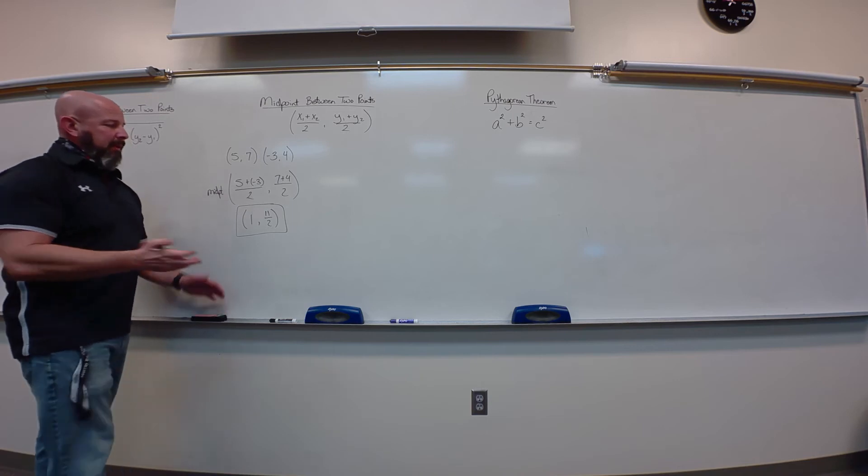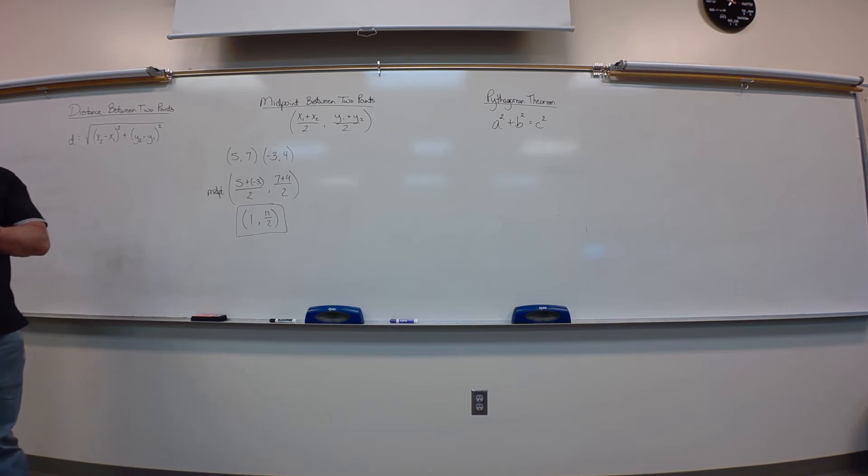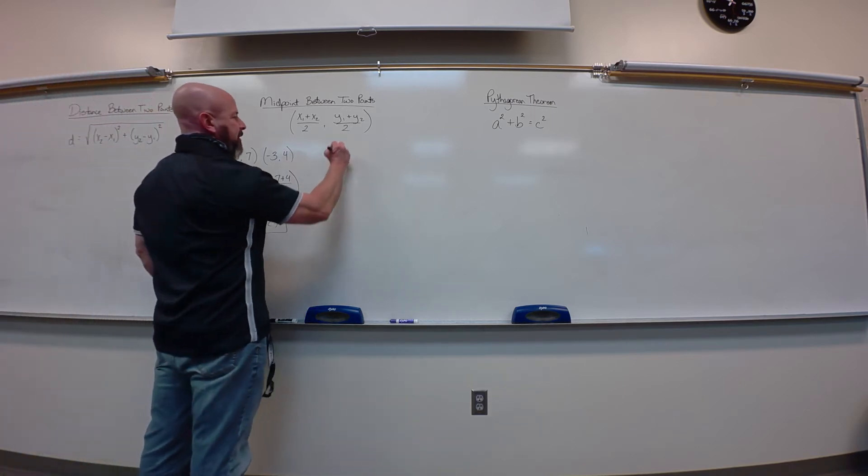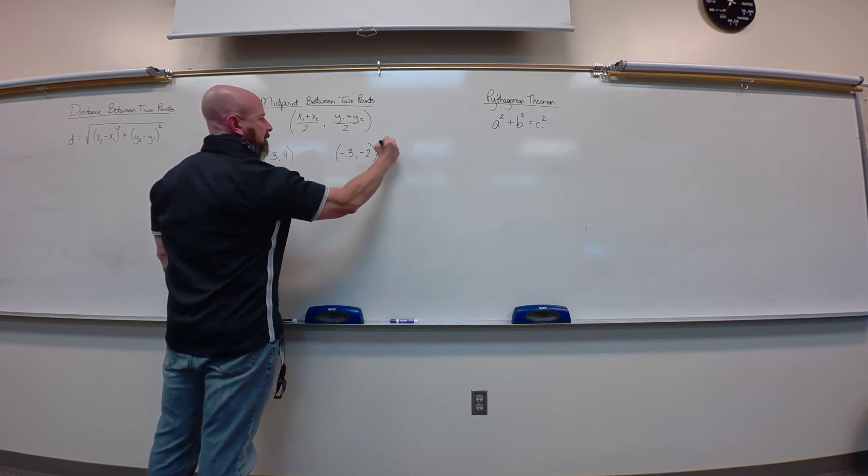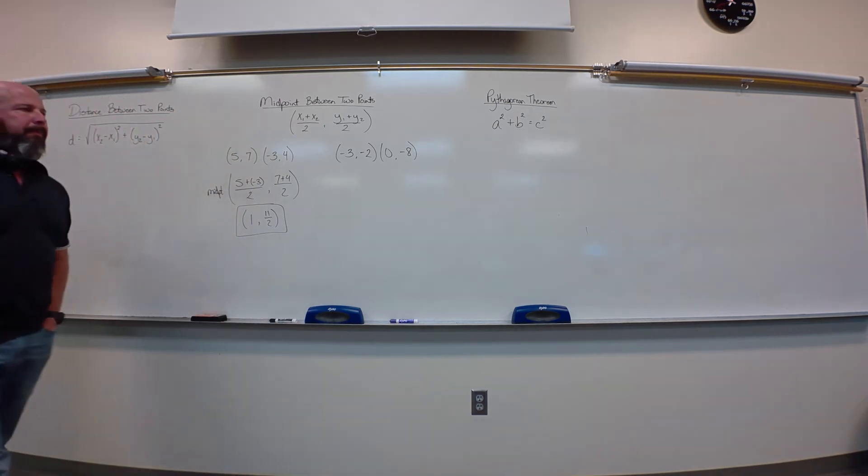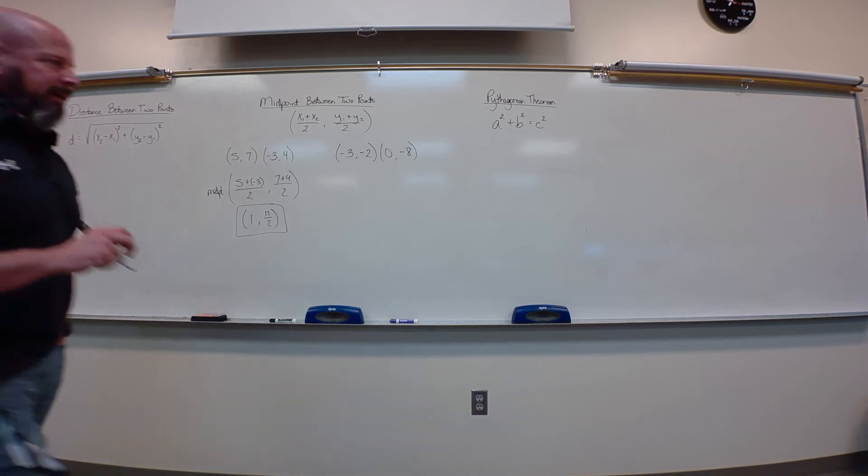All right, there's not really going to simplify there with 11 halves, seven plus four is 11. So, 11 halves is fine, 5.5 is fine, we're going to have fractions that simplify and some that don't. The worst part that gets us, generally, is if we see a bunch of negatives, because the negatives kind of give us a fit. Let's do something like this, negative three, negative two. Zero, negative eight, so I'm still, for the midpoint, I'm going to average my x's, average my y's.